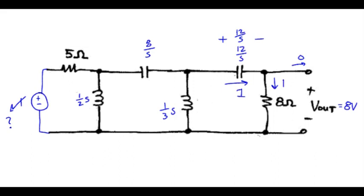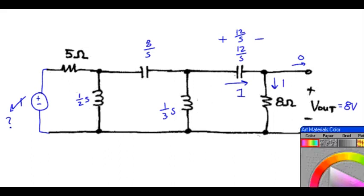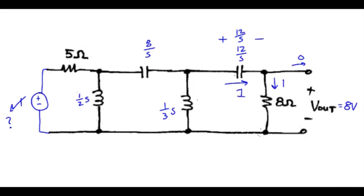We have a total voltage rise from... I'll change colors. Total voltage rise going from this node to that node of 8 volts plus 12 over S. So now our expressions are starting to get a little bit larger.